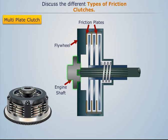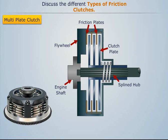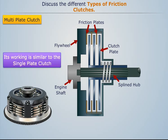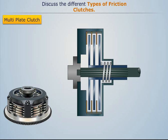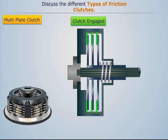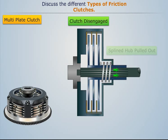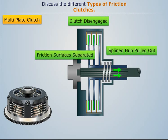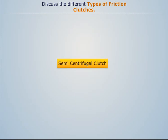Multi-plate clutch: A typical multi-plate clutch assembly consists of multiple friction plates attached to the flywheel housing, which engage with multiple clutch plates mounted on the splined hub to provide better and greater torque transmission. Its working is similar to the single plate clutch. In ordinary condition, these clutch plates remain engaged with the friction plates due to the force applied by the pressure plate. For disengaging, the clutch pedal is pressed, which pulls the splined hub outside against the force of the spring.